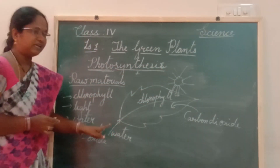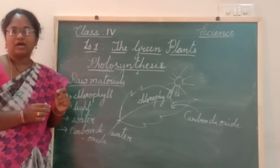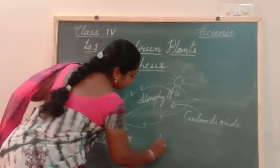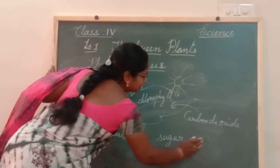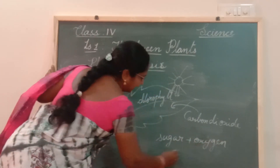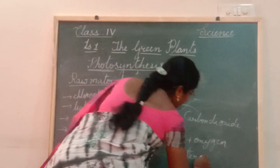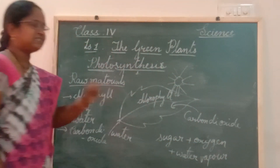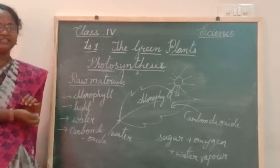When the leaf puts together sunlight, chlorophyll, carbon dioxide, and water, it prepares food and gives out sugar as the end product. Along with the sugar, it also gives out oxygen and water vapour. So the end products are sugar, oxygen, and water vapour.